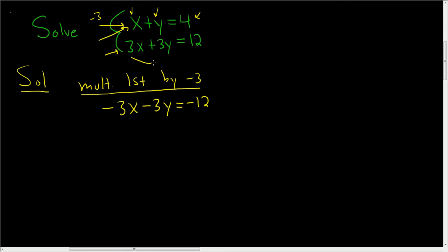Now right below it we'll write the second equation: 3x plus 3y equals 12. And now we'll add. If you add these you get zero, if you add these you also get zero.